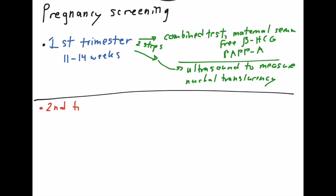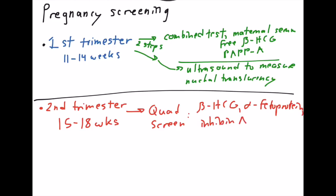Second trimester screening tests. This is a little bit more simple and straightforward because you're only testing the maternal serum and this is at 15 to 18 weeks. The quad screen makes sense because you're testing for four different things: beta HCG, alpha fetoprotein, inhibin A, which is used as part of the feedback loop for the hormone regulatory system, and estriol. That's what the quad screen is.